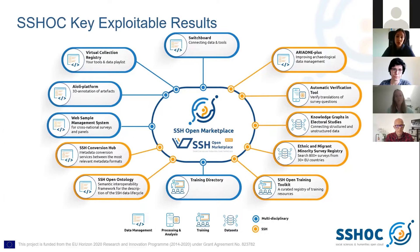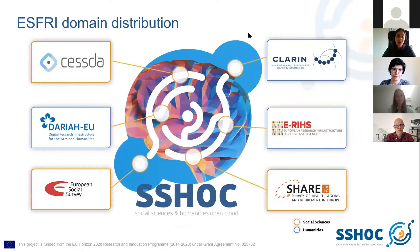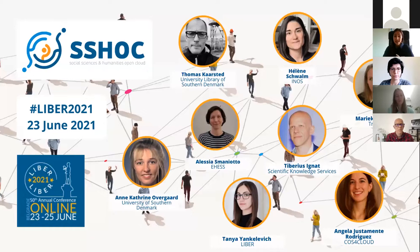All tools focus on data management, processing and analysis, training, or datasets. Looking at domain distribution among partners: social sciences are covered by CESSDA, European Social Survey, and SHARE, while humanities are covered by DARIAH, CLARIN, and the European Research Infrastructure for digital science. You can always learn more on the project website.